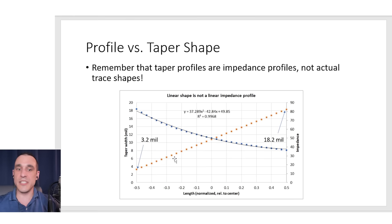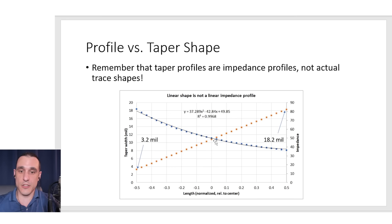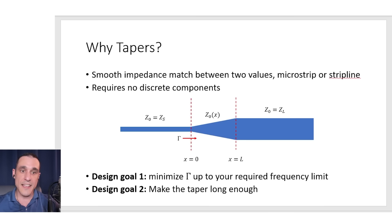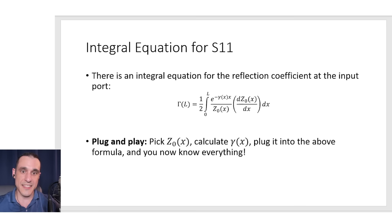Let's say we didn't need to go from 3.2 mils to 18.2 mils — what if we just needed to go from 7 mils to 13 mils, somewhere in the middle region of the graph? In that case, the curve with the blue dots is going to be very close to linear. So in many cases a linear shape will correspond to a linear impedance profile, but not in every case. In many practical cases, this linear shape does have a linear impedance profile, and then you can use that in this integral to get the reflection coefficient.